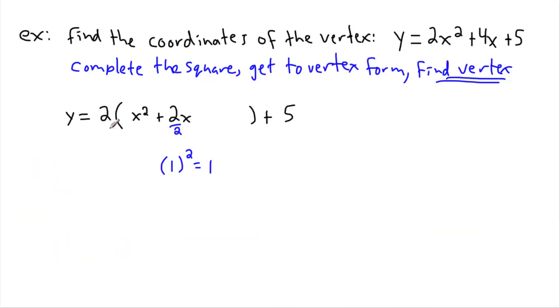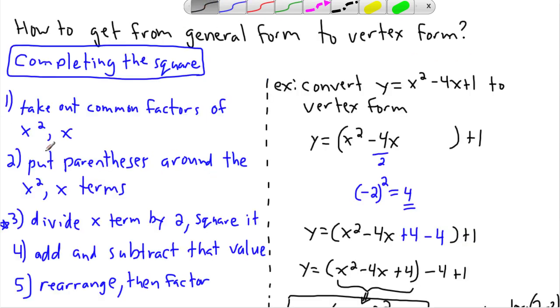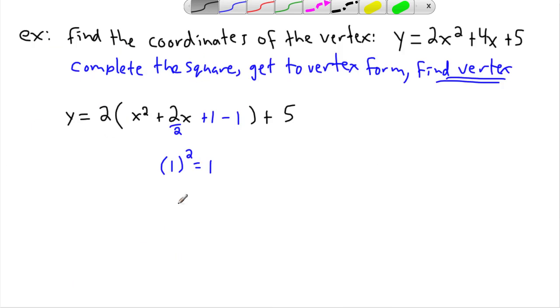And then what I'm supposed to do with that number, I'm supposed to add and subtract that value. So I'm going to add 1 and I'm going to subtract 1. Maybe I'll do it all in one step here. So I'll add 1 and subtract 1. And again, the reason I can do that is because plus 1 minus 1 is the same thing as just doing nothing. It's like doing a 0. But the reason we do this is because then I can rewrite this. So if we look at our last step here, we're supposed to rearrange then factor.